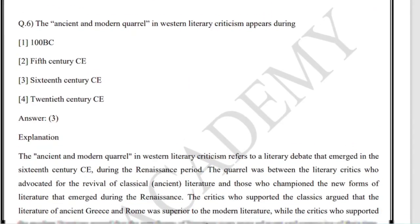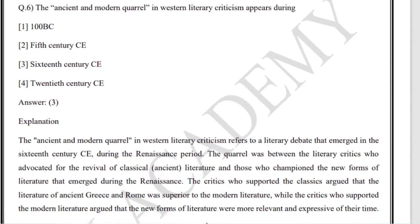The ancient and modern quarrel in Western literary criticism appears during which period? Options are 100 BC, fifth century CE, 16th century, or 12th century. The answer is the third one - 16th century.